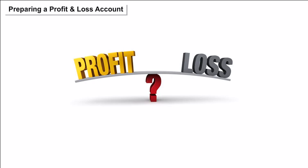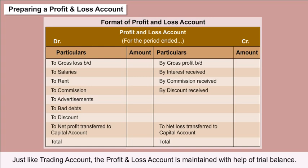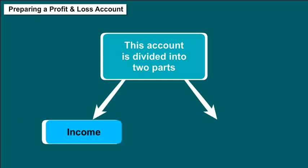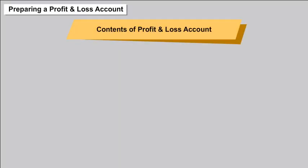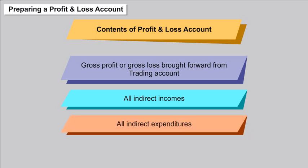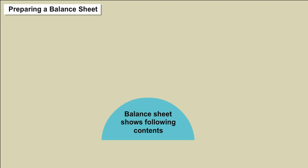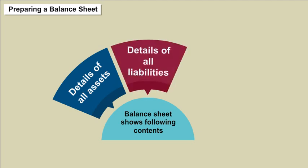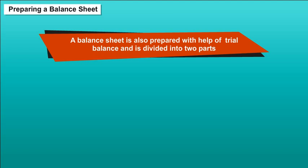Preparing profit and loss account: Just like the trading account, the profit and loss account is maintained with the help of the trial balance and is divided into two parts — income and expenditure. Contents include gross profit or gross loss brought forward from the trading account, all indirect incomes, all indirect expenditures, and net profit. The balance sheet shows details of all assets, details of all liabilities, and net profit or net loss, and is also divided into two parts — liabilities and assets.